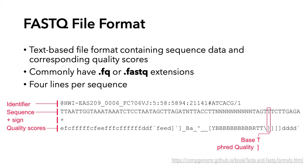The first line, the identifier, provides information about the instrument and the sequencing run. The second line contains the sequence. Then there's a plus sign, and finally the last line consists of quality scores. There's a quality score for each base.